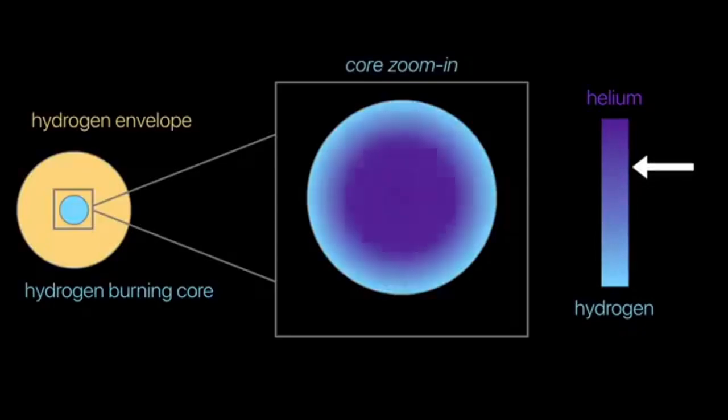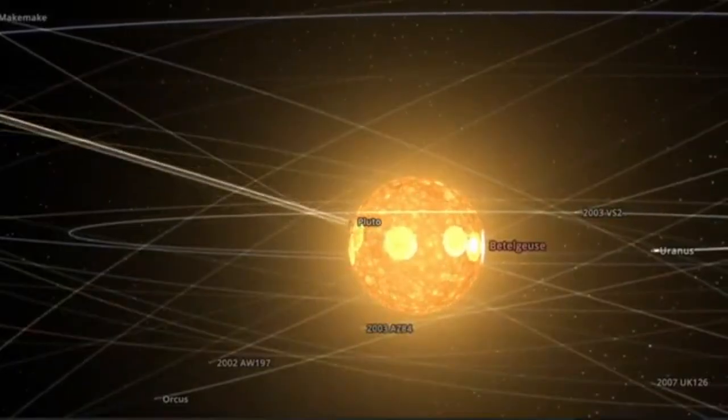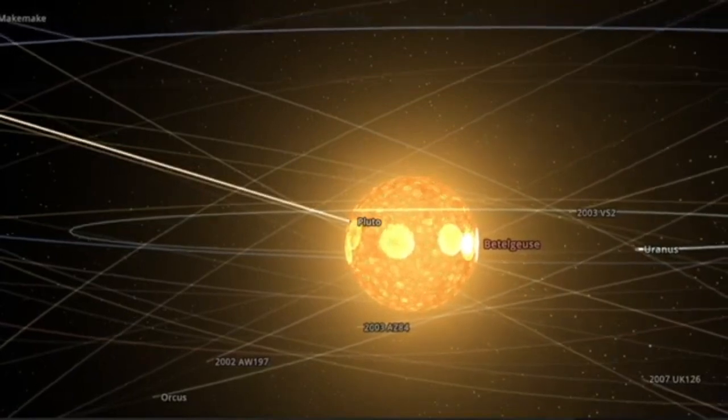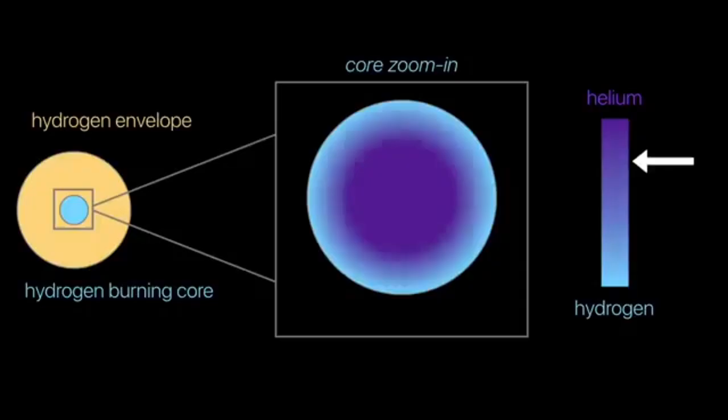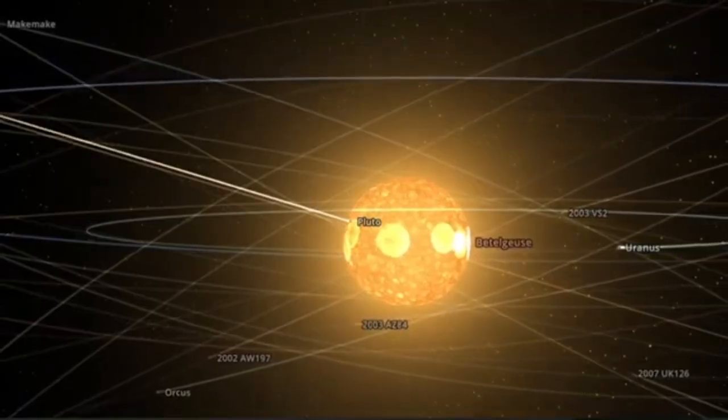This shows us just how different stars can be depending on their size. Larger stars like Betelgeuse burn hot and live fast, reaching the end of their lives in just a few million years. Smaller stars like Sawara take much longer to grow and develop. In fact, scientists now believe that Sawara may never fully become a star. It might remain forever in this early, inactive state.